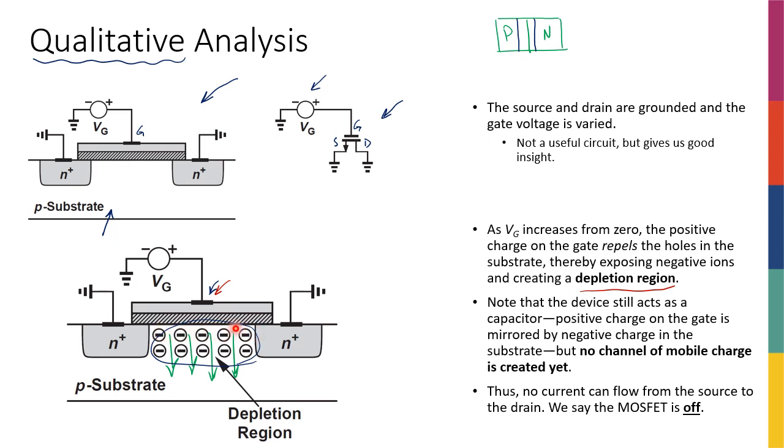Because I don't have any free electrons in the channel or in this area right under the oxide, you can imagine that no free electrons or no free charge carriers means that I'm not going to be able to have any current flowing between drain and source, even if the drain and source both are not connected to ground. Even if I apply some voltage between drain and source, because there's no free carriers here, I'm not going to have any current between them.